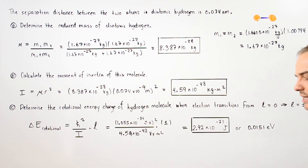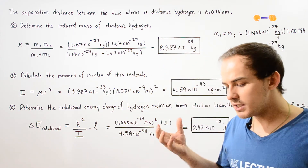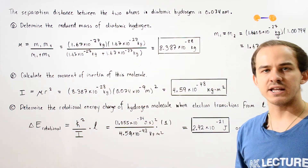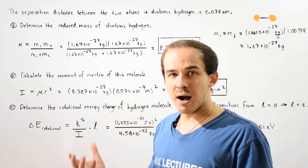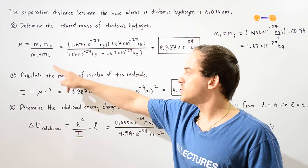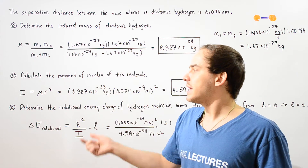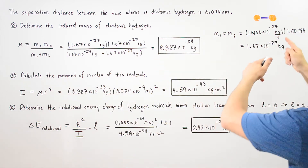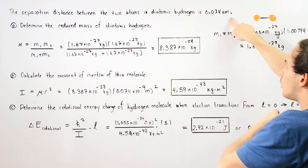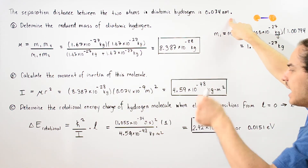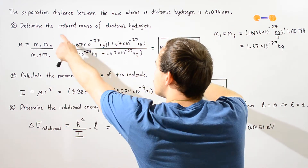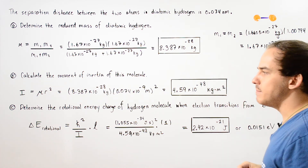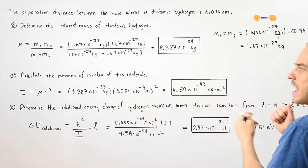In part B, we calculate the moment of inertia of our diatomic molecule as it rotates in space, using the result from part A. Recall that the moment of inertia of a diatomic molecule is given by I equals mu times R squared, where R is the separation distance in meters. Converting 0.074 nanometers and squaring, then multiplying by the reduced mass, gives us approximately 4.59 times 10 to the negative 48 kilogram meters squared.